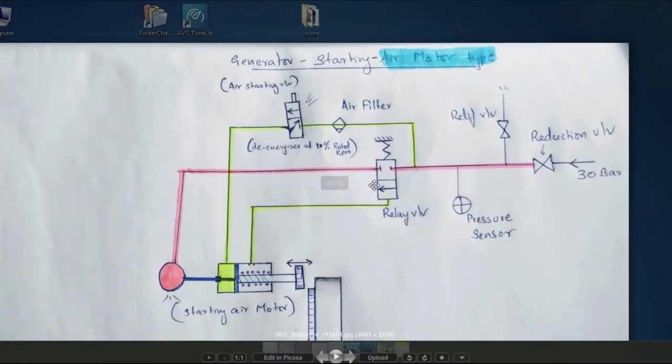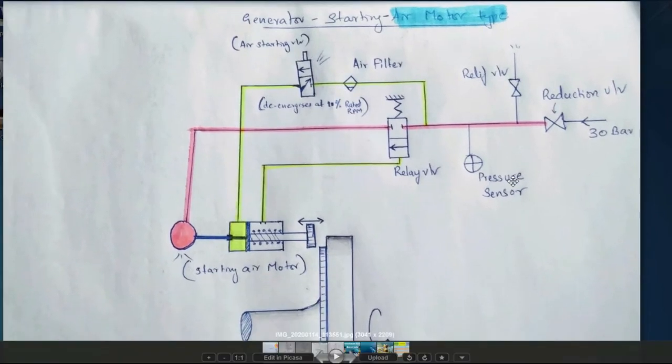For that you only need to know 4 valves. One is reduction valve, relief valve, then one relay valve and your starting air valve. Now this reduction valve reduces 30 bar air to 7 bar air. And there is a pressure sensor in here, you know the relief valve. Now air is available till here.